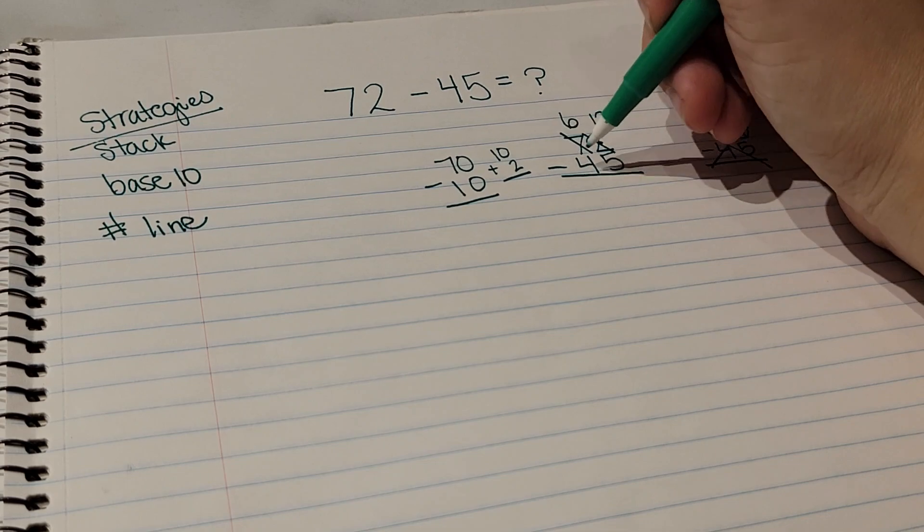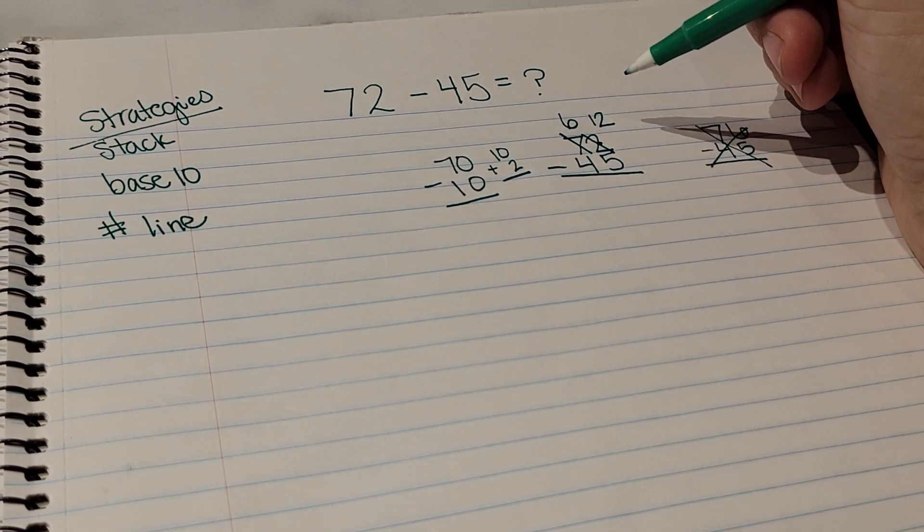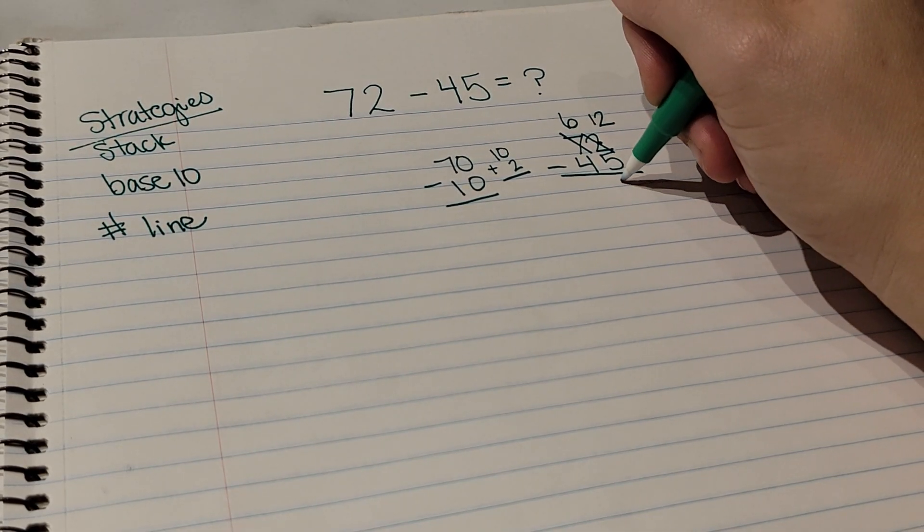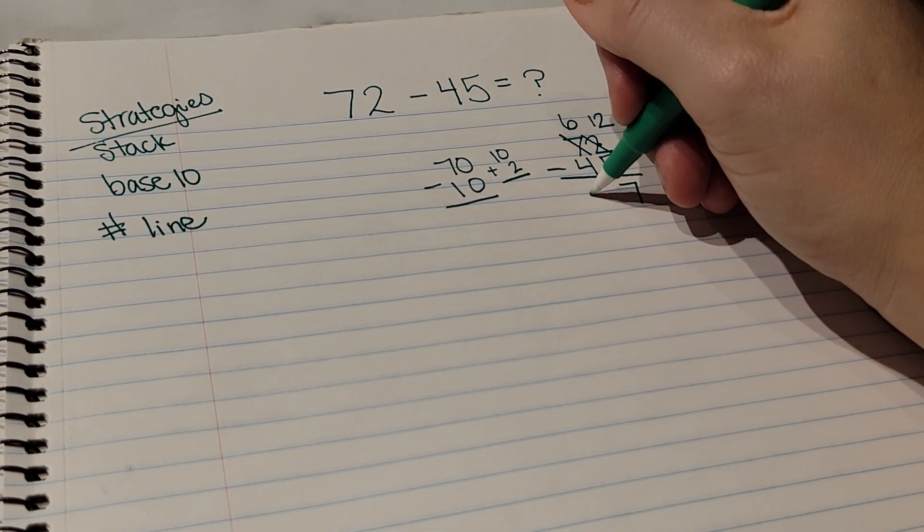Now 10 plus 2 is 12, so I teach them to cross off the 2 and write the 12, and then they take 12 take away 5. Now we should not have math errors here, so if they need to draw a picture, count on their fingers, whatever strategy to make sure they're correct. 12 minus 5 is 7, and then 6 take away 4 is 2.